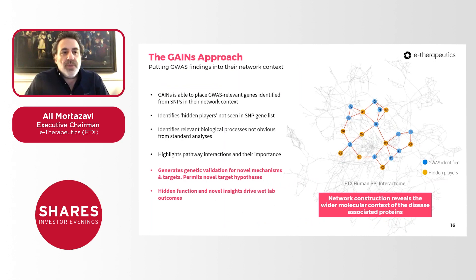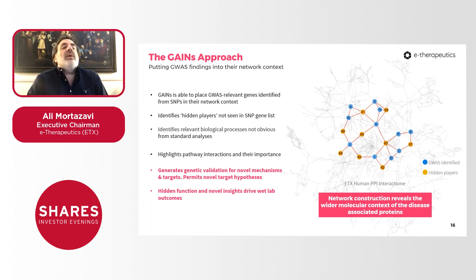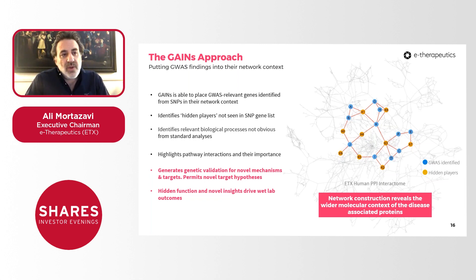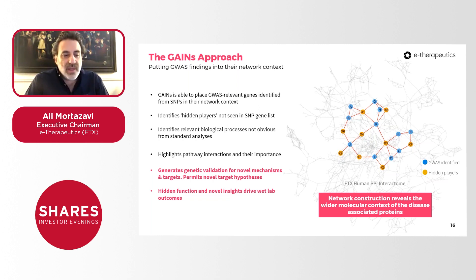Our GAINS approach puts GWAS findings into a network context. We can take those 200 gene lists and, using our informatics platforms, zoom in to find very important biological processes such as inflammation. From high-level biological processes we can find pathways particularly important in diabetes or other complex diseases. From a pathway, it's possible to go back into an NDD project and generate compounds, or zoom in further from pathways into targets for more targeted therapies such as RNAi, CRISPR, or zinc finger nucleases.